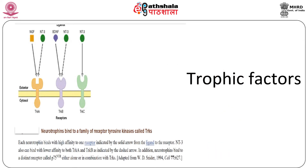Now we will talk about the neurotrophins or trophic factors present in the cell. Neurotrophins bind to a family of receptor tyrosine kinases called the TRKs. Each neurotrophin binds with high affinity to one receptor. NT3 can also bind with lower affinity to both TrkA and TrkB. In addition, neurotrophins bind to a distinct receptor called P75. NGF, or nerve growth factor, is a homodimer of 218-residue polypeptides and belongs to a family of structurally and functionally related trophic factors collectively referred to as neurotrophins. BDNF and NT3 are also members of this protein family.